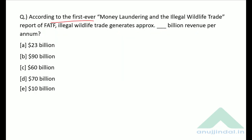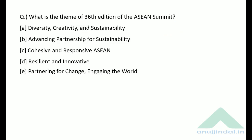According to the first ever Money Laundering and Illegal Wildlife Trade report of FATF, illegal wildlife trade generates approximately how much revenue per annum? According to this report, illegal wildlife trade generates approximately $23 billion per annum.